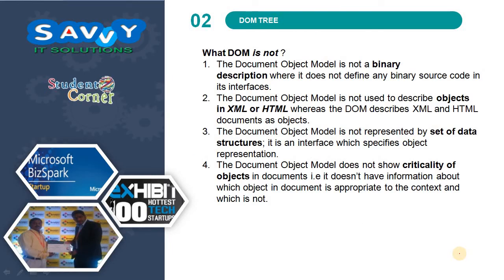What DOM is NOT: The Document Object Model is not a binary description — it does not define any binary source code in its interface. The DOM is not used to describe objects in XML or HTML; rather, the DOM describes XML and HTML documents as objects. The DOM is not represented by a set of data structures — it is an interface which specifies object representation. The DOM does not show the criticality of objects in documents; it does not have information about which object in a document is appropriate to the content and which is not.